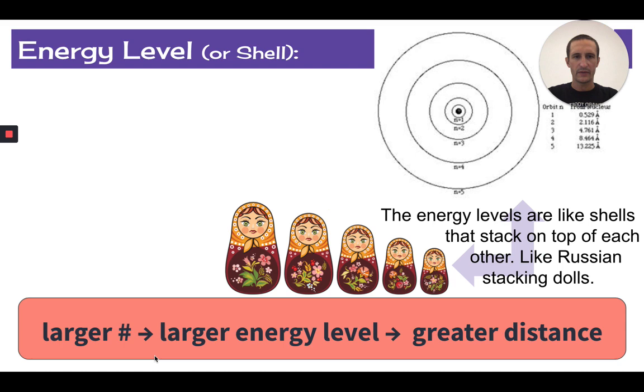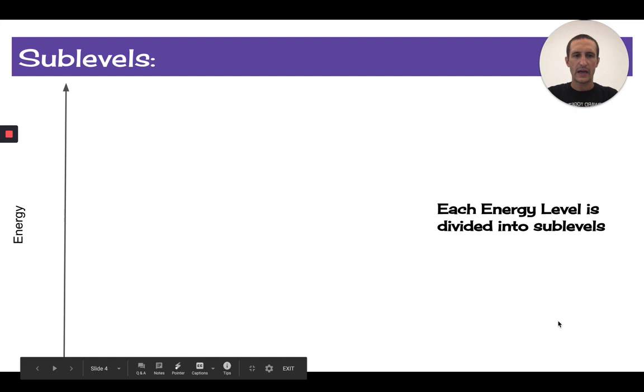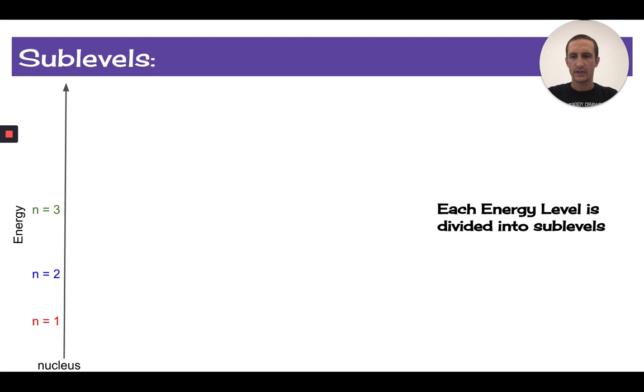We do number each energy level: one, two, three, four. And the larger the number means it's the larger energy level, which literally means it's a greater distance from the nucleus. Each of the energy levels is further divided into sublevels. So here we have energy level one, energy level two, three, four, and it continues on from there. And again, the higher the energy level, the greater the distance from the nucleus.